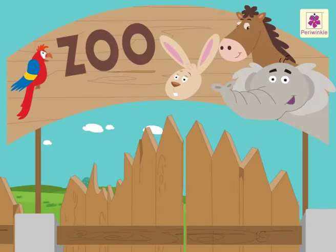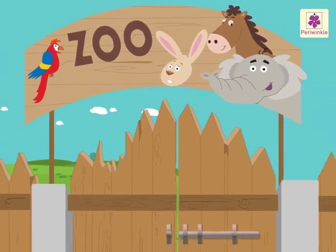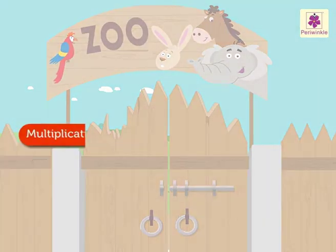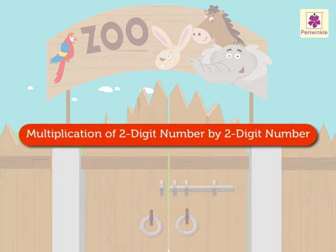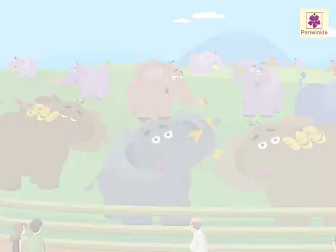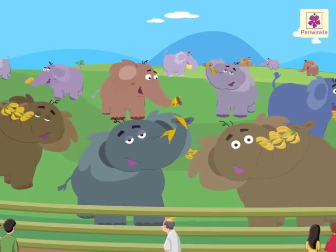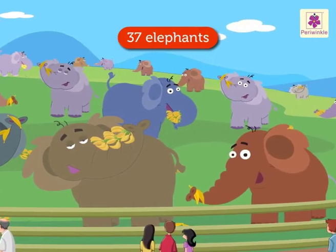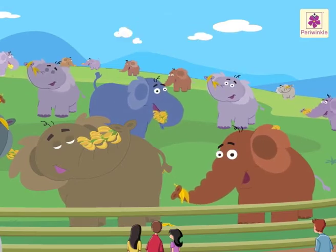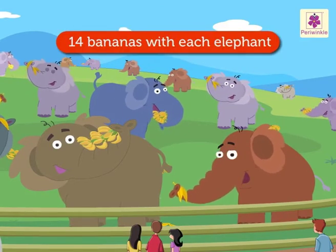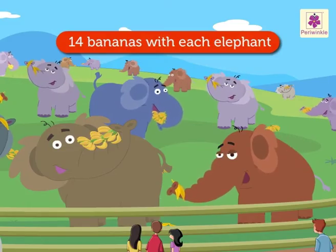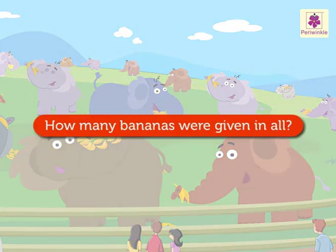Look! Where are we? At a zoo! It would be very exciting to learn multiplication of two-digit number by two-digit number here. There! Look at the huge elephants. There are 37 elephants in the zoo. Each elephant was given 14 bananas to eat in the morning. How many bananas were given in all?